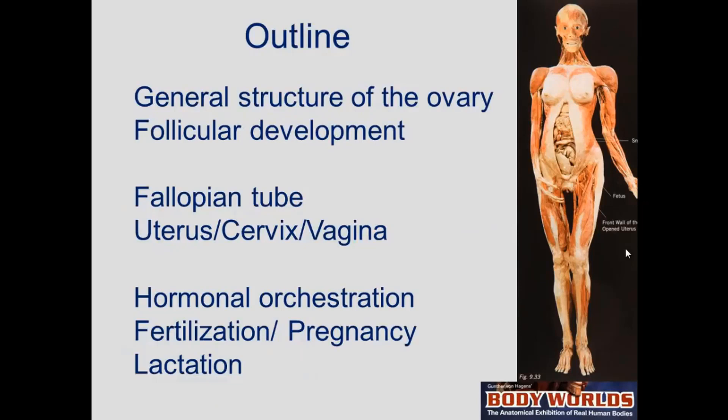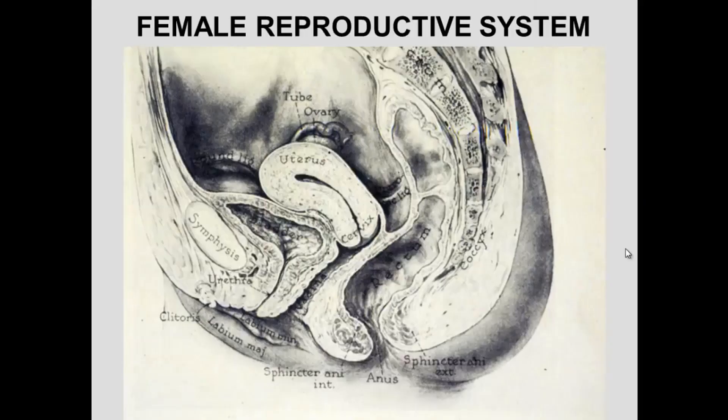We'll start with a general structure of the ovary, follicular development, fallopian tube, uterus, cervix, and vagina. Then we'll talk about hormonal orchestration of the process, fertilization, pregnancy, and a little bit about lactation.